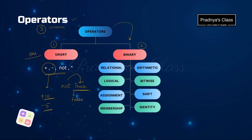The second category is binary operators — they operate on two operands, which can be constants or variables. Out of these, we need to focus on relational operators, arithmetic operators, logical operators, as well as membership operators. In this chapter we will be getting one-mark questions to find out the valid arithmetic, relational, or logical operators.